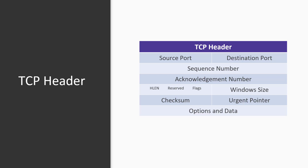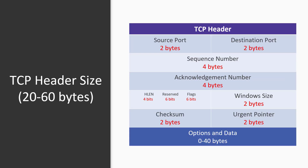The fields of the TCP header are: source port, destination port, sequence number, acknowledgement number, header length, reserve bits, flags, window size, checksum, urgent pointer, and options and data. If you want to see those in sizes, here you go. Before going to Wireshark to demonstrate and explain the header in detail, let us first take a look at how data is transferred between sending and receiving endpoints.